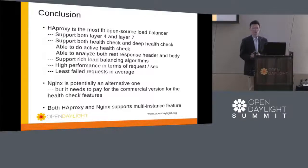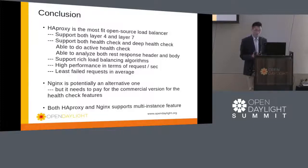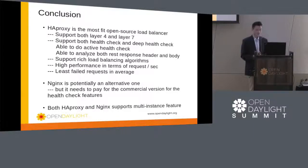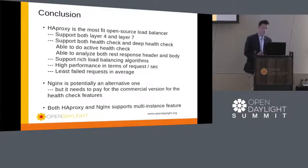The conclusion is that HAProxy is probably the most fitting open source load balancer for this framework. First, it supports both layer 4 and layer 7. Second, it supports both health check and deep health check — actively sending health checks and analyzing both response header and body. It has rich load balancing algorithms, high performance in requests per second, and the least failed requests on average. NGINX is potentially an alternative but requires payment for the commercial version for health check features. Both HAProxy and NGINX support multi-instance features, meaning high availability for the load balancer itself.